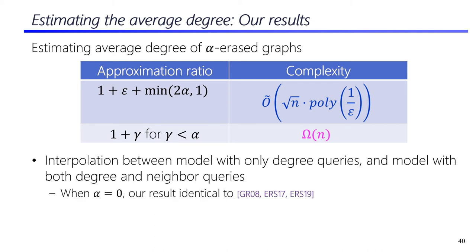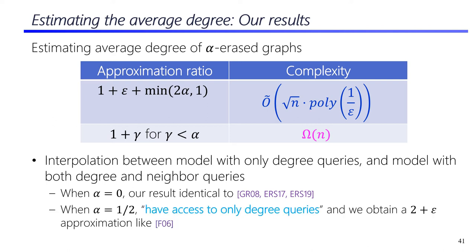Our result can be seen as unifying Feige's model with only degree queries and the model with both degree and neighbor queries as in later works. Specifically, when alpha equals 0, there are no erasures and we obtain a 1-plus-epsilon approximation in O(root-n) queries. As alpha increases from 0 to 1, it can be seen as progressively losing access to some neighbor queries, moving towards the model with only degree queries.